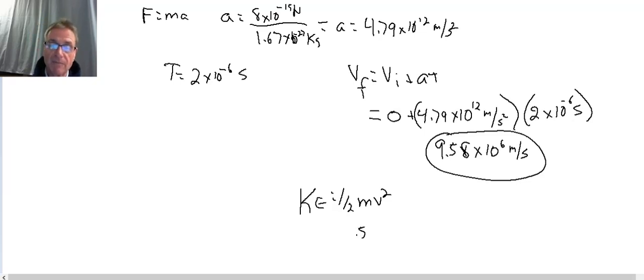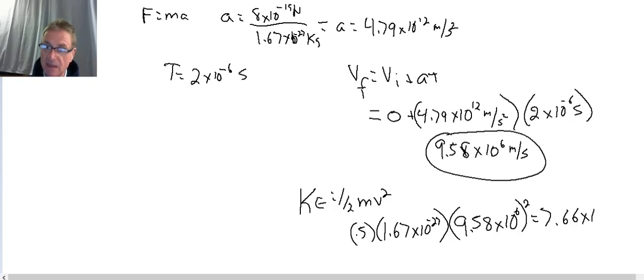So we get 0.5 times 1.67 times 10 to the minus 27th kilograms. I'm going to leave the units out for now. Times the velocity squared, 9.58 times 10 to the 6th squared, and we're going to get some number of joules. And the answer that we get is 7.66 times 10 to the minus 14th joules.